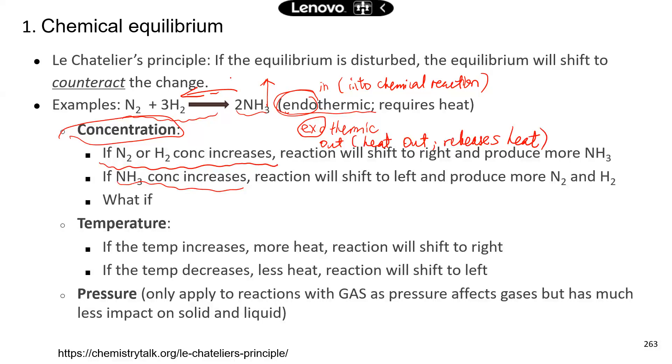Now, how about temperature? If the temperature increases, that means there is more heat present. Now with that, the chemical reaction wants to use the heat, so it's going to shift to the right. Because the chemical reaction requires heat, so if it goes to the right, then it will use the heat to counter the temperature increase. And this is how it works.